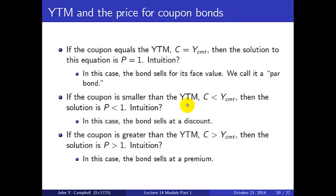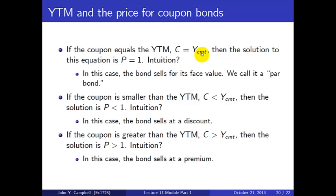On the other hand, if the coupon is smaller than the yield to maturity (C less than Y), then P is less than 1 — the coupons aren't large enough to compensate for the time value of money, and the bond sells at a discount. If the coupon is greater than the yield (C greater than Y), then P is greater than 1 — the coupons more than compensate, and the bond sells at a premium. When coupon bonds are issued, the Treasury and other issuers try to set initial coupons equal to yields at issue, so bonds tend to be sold initially near par. Then over time, as interest rates move, the price moves away from par accordingly.